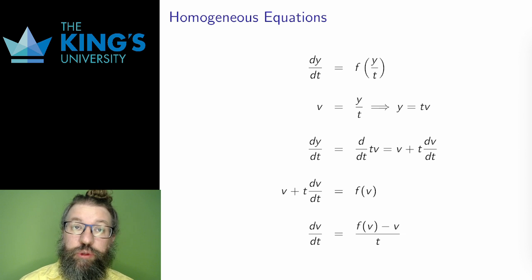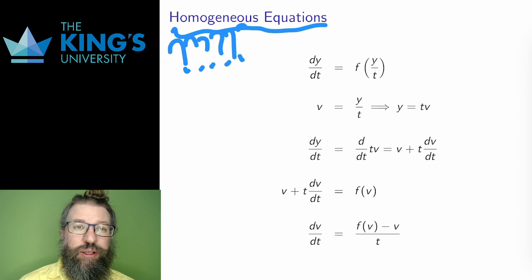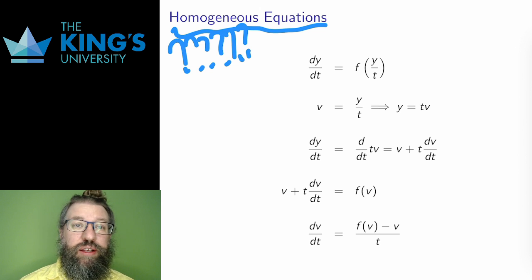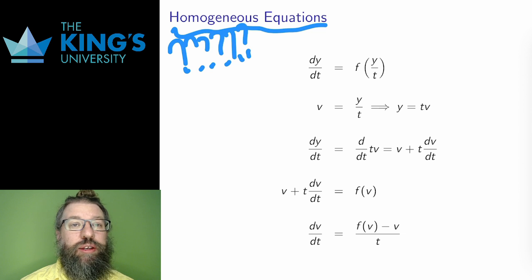The first is, unfortunately, called homogeneous equations. This has nothing to do with homogeneous as I used it in the previous video. The terms come from different sources, different pieces of mathematics, and both use the same term — now we're stuck with them meaning two different things in the same piece of DEs. These are the standard terms, so we're stuck with this kind of mathematical naming nonsense.